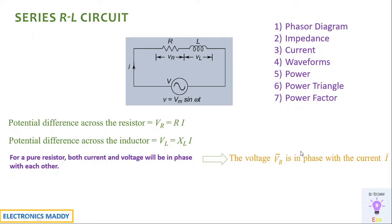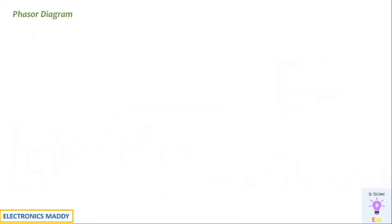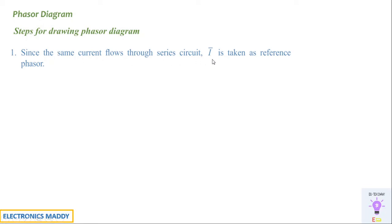When dealing with AC supply, remember everything must be represented as phasors — there will be a bar on top of every quantity. For a pure inductor, current lags voltage by 90 degrees, so VL leads current I by 90 degrees. These two points are key. Now, steps for drawing the phasor diagram — a lot of students find this complicated, but it is very simple.